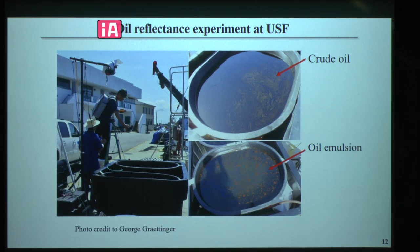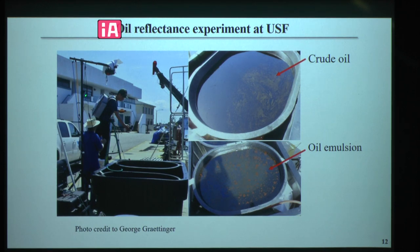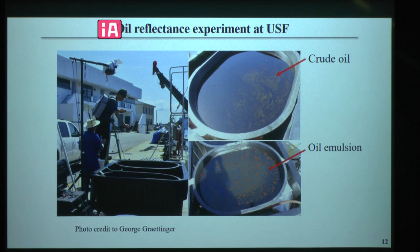To further study oil's optical properties contribution to reflectance, I conducted an oil reflectance experiment at USF. I put known volumes of crude oil and oil emulsion into two identical black tanks and measured the reflectance spectra using a spectrometer. Oil emulsion is formed through the emulsification process — a weathering process where water gets entrained into oil in the form of small water droplets. Stable oil emulsion could have water content over 60% to 80%, substantially increasing volume and viscosity, reducing evaporation and biodegradation.